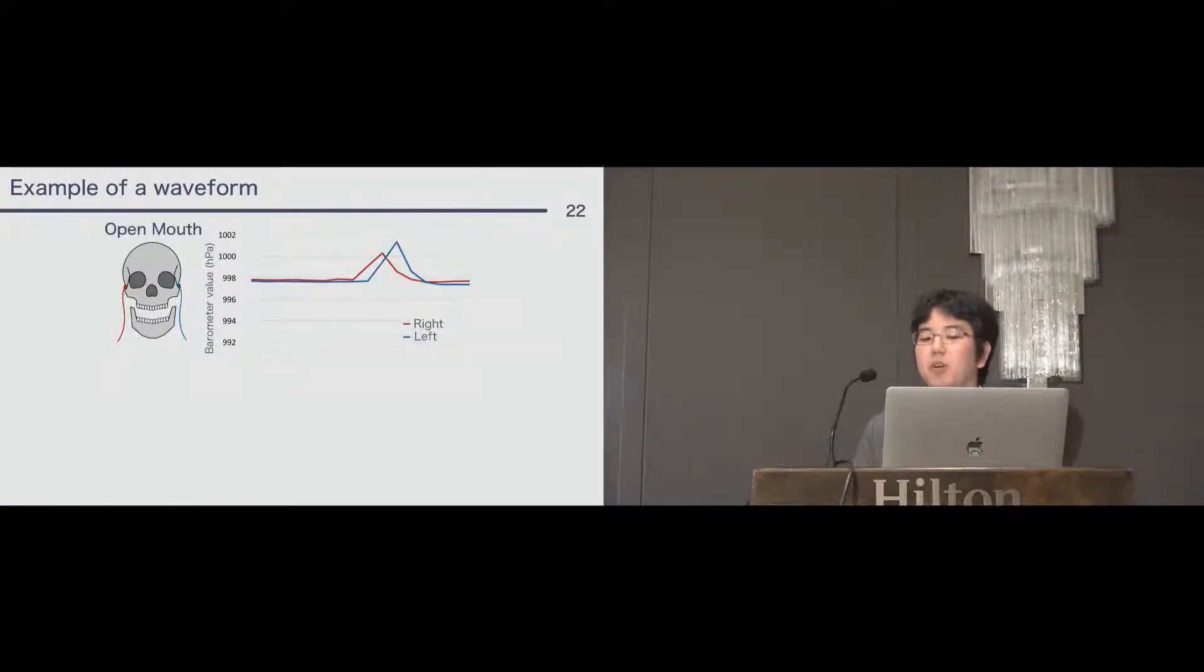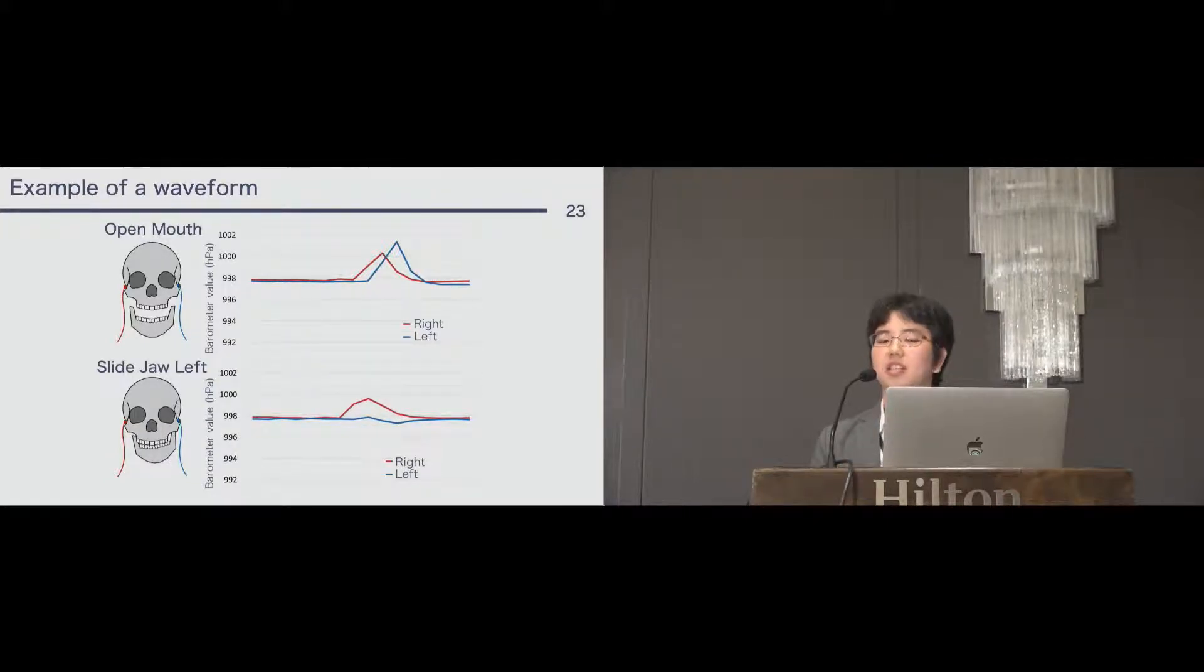Our software extracts and classifies the characteristic changes. This is an example of a waveform when user performs open mouth. In this example, both barometer values, that is right and left, make peaks. Another example is slide jaw left. Slide jaw left is different from open mouth. The right barometer values are changed, but left barometer values change a little. In this way, face-related movements show characteristic changes by movements.